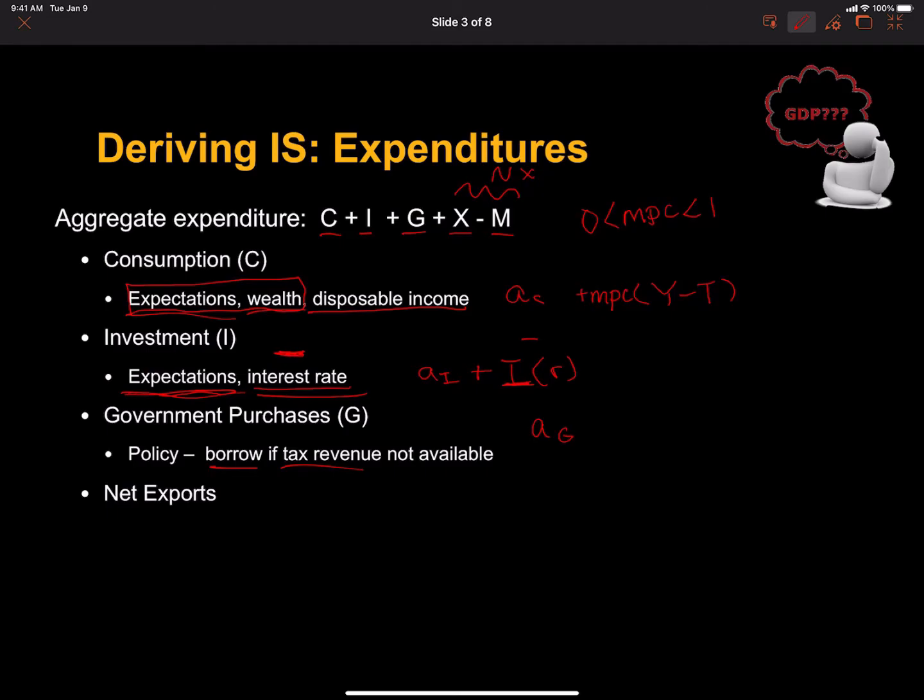Now, let's think about net exports. Net exports has two components, exports and imports. The exchange rate, relative prices, and foreign income - these sorts of things are going to determine perhaps largely the export component. So we're going to say that's autonomous with respect to income.